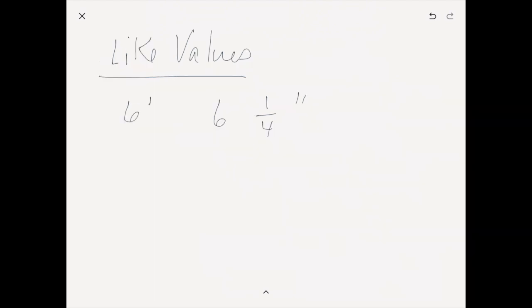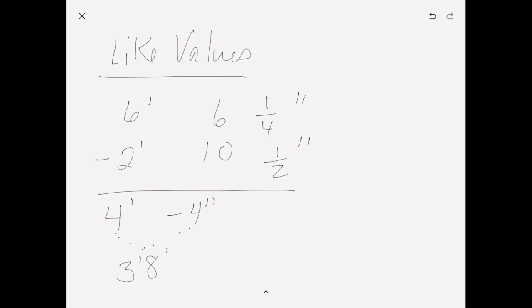With the like-values strategy, kids set this up and it will often look kind of like the traditional way on paper, but kids will naturally do this strategy in their head. They want to subtract the pieces that are the same. So they'll take their feet and subtract: they've got four feet. Then they'll take their six inches and ten inches. Based on number sense, if I have six inches and need to take away ten inches, I could take away six, but I still need to subtract four more inches. They can subtract those four from the feet column, getting three feet, eight inches.